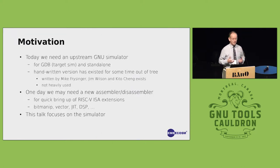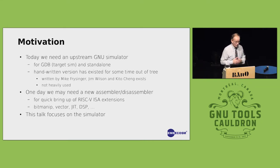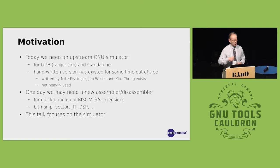It's driven by the need for an upstream GNU simulator. There are plenty of simulators out there — QEMU, Spike, and so forth. Mike Freisinger, Jim Wilson, and Kito Cheng hand-wrote a GNU simulator upstream which is still used but not very widely. We want something that can just be in the repository as a standard simulator so you can do target-sim in GDB, and we want it in a way that's easy to update with new instruction set extensions. CGen gives you that.